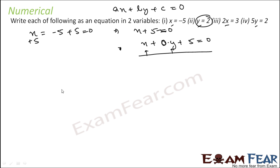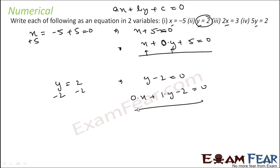Similarly, for y equals 2, subtract 2 from both sides to get y minus 2 equals 0, written as 0·x plus 1·y minus 2 equals 0. So a equals 0, b equals 1, and c equals minus 2. Again, this is technically a one-variable equation written in two-variable form.